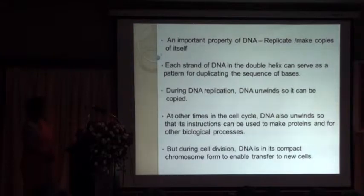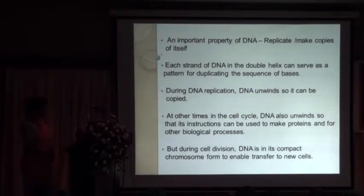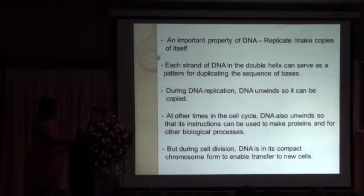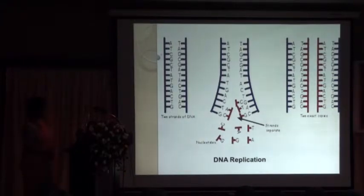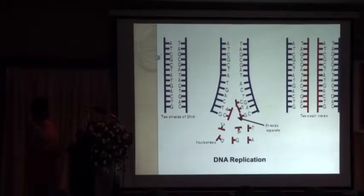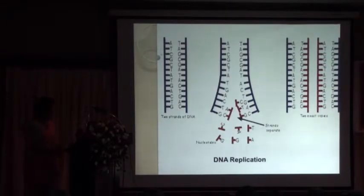An important property of DNA is replication — that is, it can be copied. That's how it passes information from generation to generation. In a double-stranded DNA you have two strands, and during replication the two strands are dissociated and then two new copies can be formed. Likewise, more copies are passed into new generations.